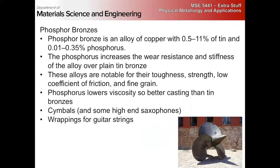Phosphor bronzes: copper with less tin than regular bronzes but with some added phosphorus. The phosphorus gives wear resistance, higher stiffness over plain tin bronzes, high toughness, high strength, and a low coefficient of friction. The phosphorus gives much lower viscosity, so better casting. These are also used for cymbals. There are actually some high-end professional-grade saxophone and brass instruments made of phosphor bronzes.